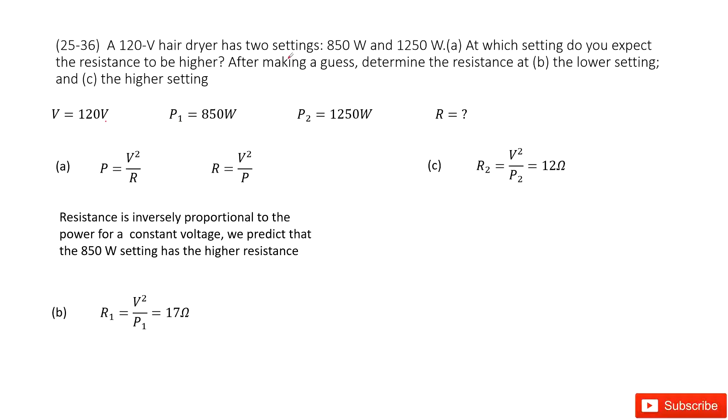And then it has two settings. At P1, the power is 850 watts. And P2, the power becomes 1250 watts. I ask you to find the resistance in each case.